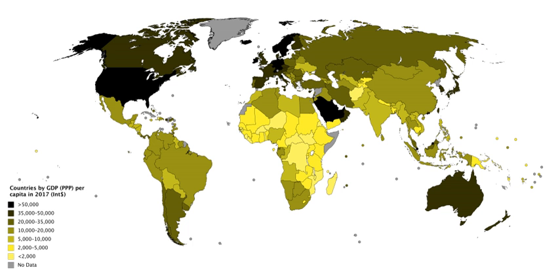GDP is product produced within a country's borders; GNI is product produced by enterprises owned by a country's citizens. The two would be the same if all of the productive enterprises in a country were owned by its own citizens, and those citizens did not own productive enterprises in any other countries. In practice, however, foreign ownership makes GDP and GNI non-identical.